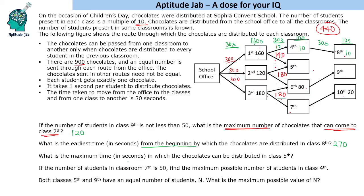The next question asks for the maximum time to distribute chocolates in class 5th. This is asking for the maximum number of students in class 5th. We have 440 chocolates to be distributed among the remaining classes. If we put the minimum of 10 in all other classes, that accounts for 140, leaving a possible maximum of 300 for class 5th.